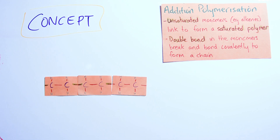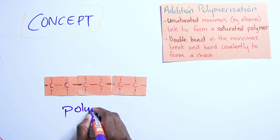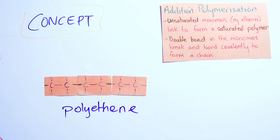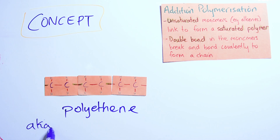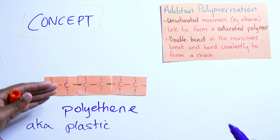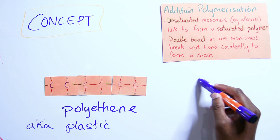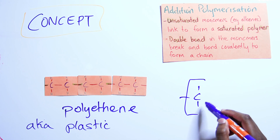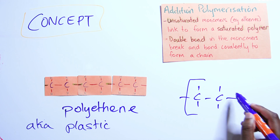All of a sudden you have more than 50 of them joining and you have a polymer. This polymer is called polyethene because it came from ethene — polyethene, also known as plastic. This is the very material we make plastic bags from. If you look at this polymer carefully, you'll notice it's just the same pattern recurring again and again.